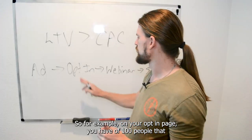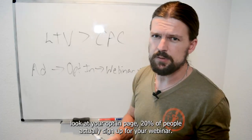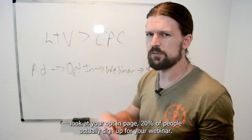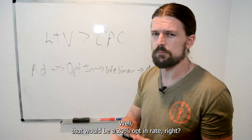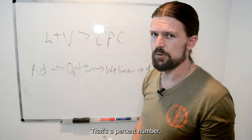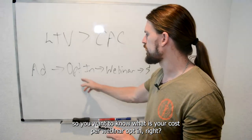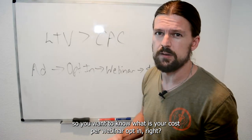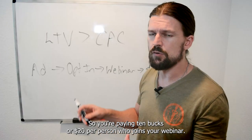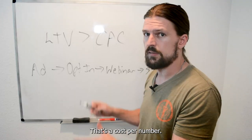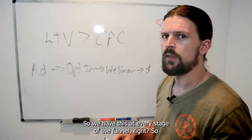There are two types of numbers to track at each stage of the funnel: percentage or rate numbers, and cost-per numbers. For example, on your opt-in page, if 20 out of 100 people sign up for your webinar, that's a 20% opt-in rate — that's a rate number. On the other hand, if you're paying $10 or $20 per person who joins your webinar, that's a cost-per number.